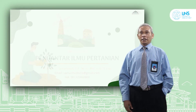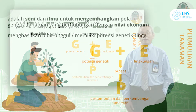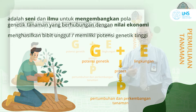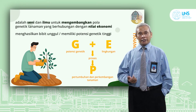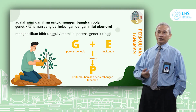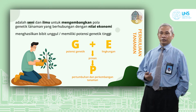Kemudian berikutnya adalah pemulihaan tanaman. Pemulihaan tanaman merupakan seni dan ilmu untuk mengembangkan pola genetik tanaman yang berhubungan dengan nilai ekonomi, bagaimana kita bisa mengupayakan supaya tanaman menjadi lebih baik dari sebelumnya, untuk menghasilkan bibit unggul yang memiliki potensi genetik yang tinggi. Pada intinya, potensi genetik yang ada di dalam tanaman kemudian berinteraksi dengan lingkungan akan menghasilkan pertumbuhan dan perkembangan tanaman, yang nanti akan kita dalami lebih lanjut di dalam agroteknologi.